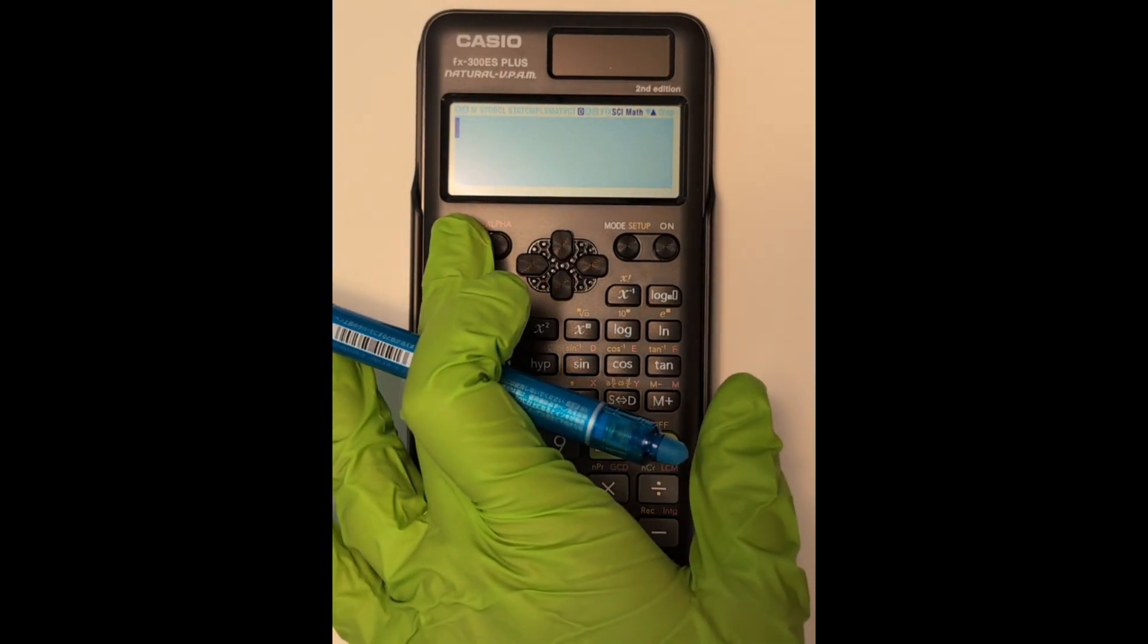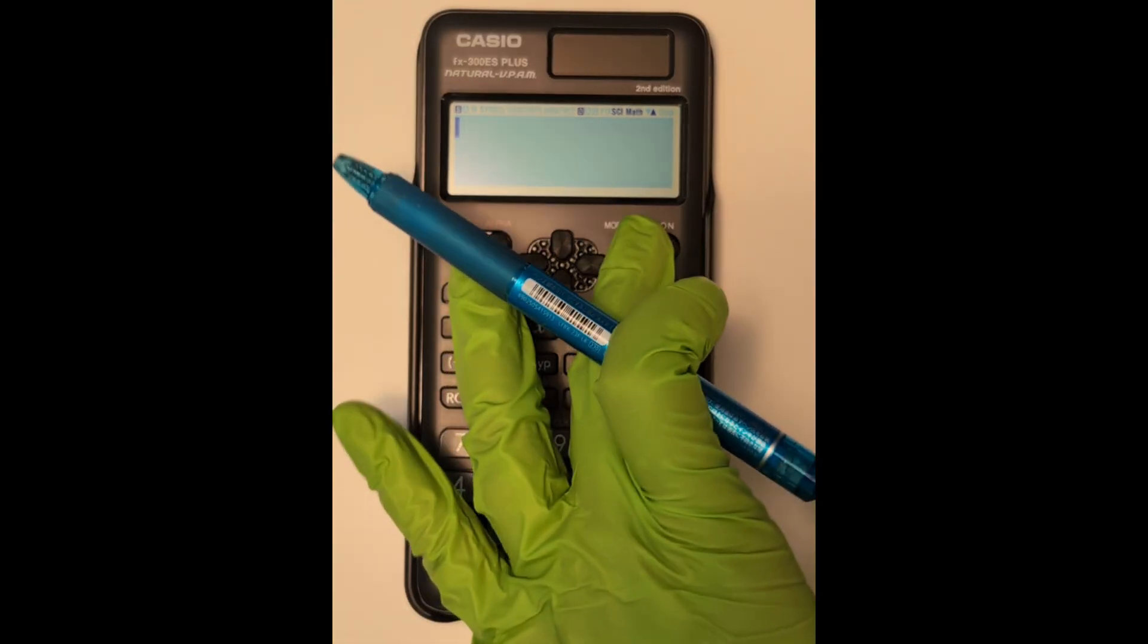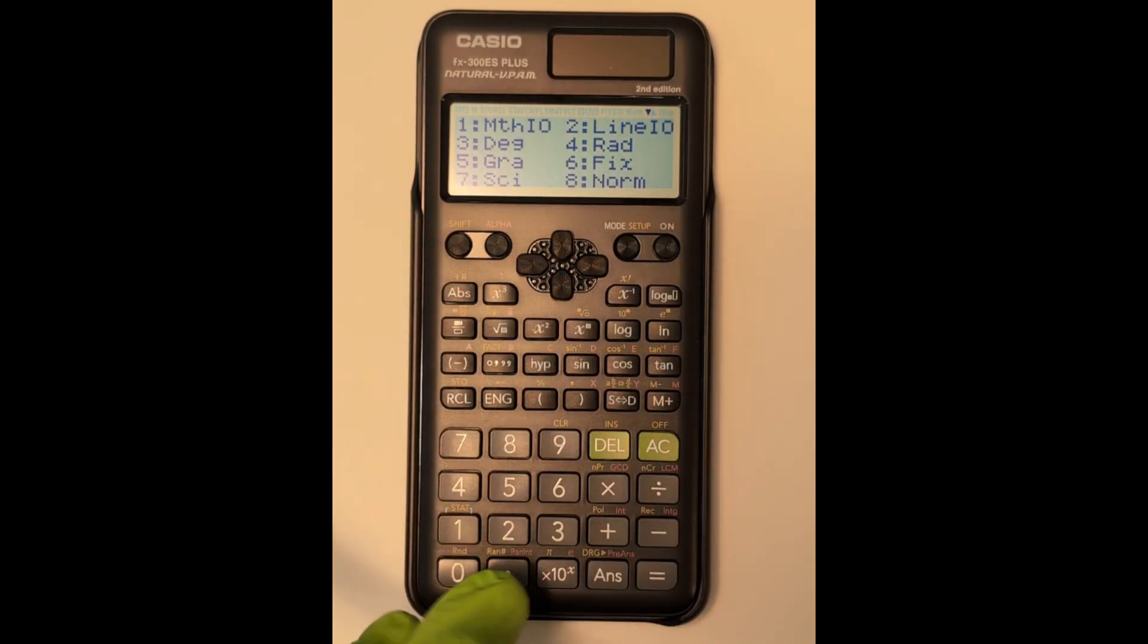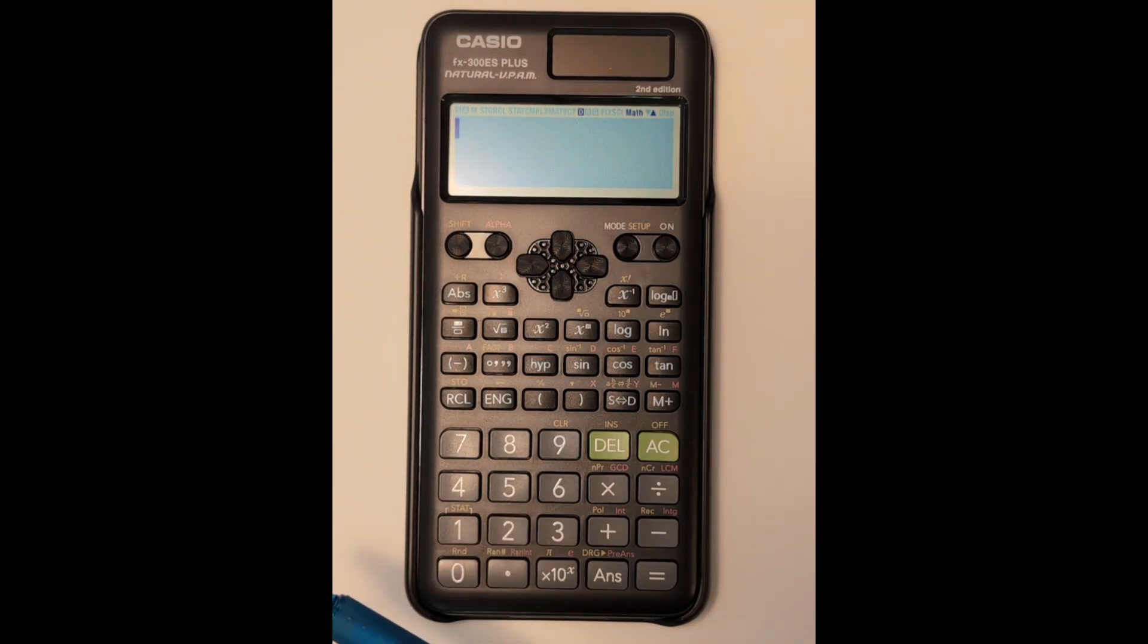When you're done with scientific notation, hit shift mode setup. Then you need to choose the number eight for norm. So hit eight, and then choose the number two to put it back into the recommended mode for this class.